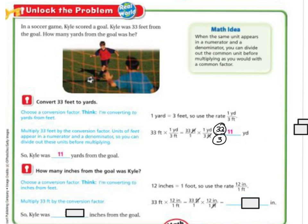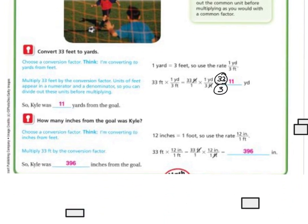So how many inches from the goal was Kyle? Well, with inches, I know that 12 inches equals 1 foot. So now I'm going to use a conversion rate of 12 over 1. So now I have 33 feet, and then we have it times 12 over 1. Again, I'm going to put the 1 under my 12. So I get 33 times 12, and 33 times 12 is 396. So Kyle was 396 inches from the goal.